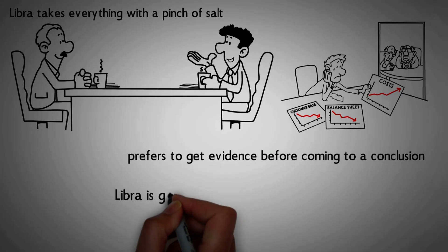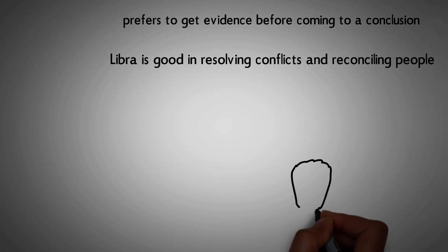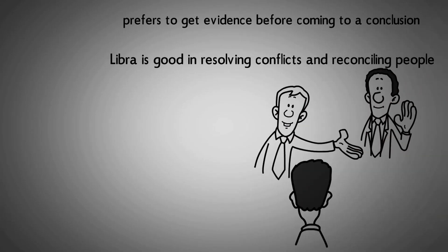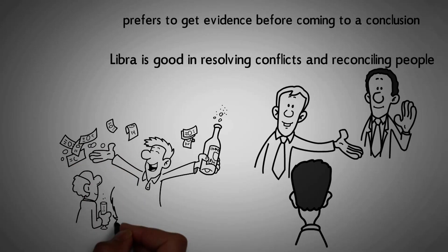Number 6. Libra is good in resolving conflicts and reconciling people. Libra helps to resolve conflicts and mediate discussions to avoid chaos. They are convincing and tactful, which helps to end disputes in an amicable manner.